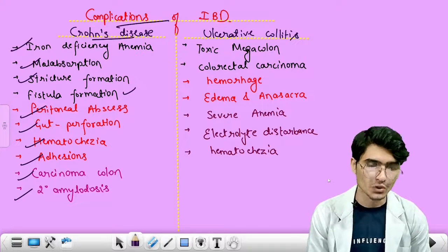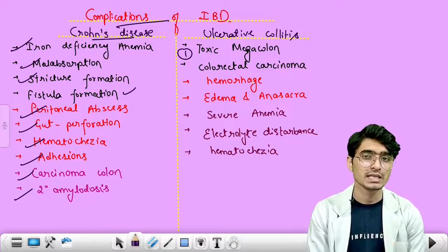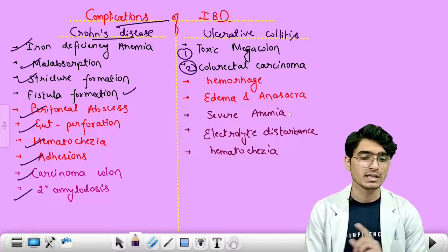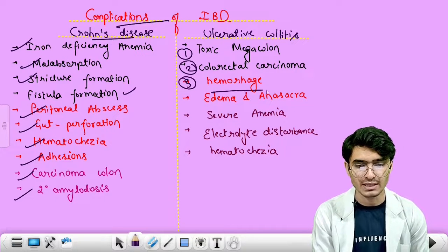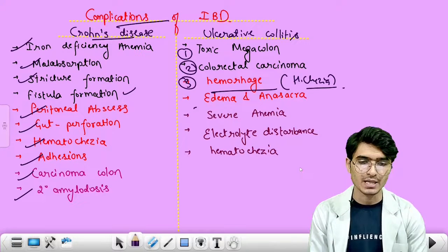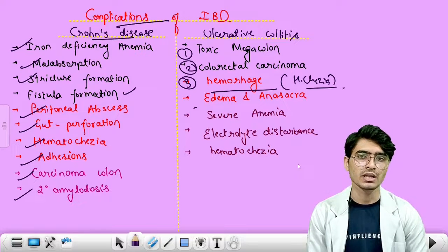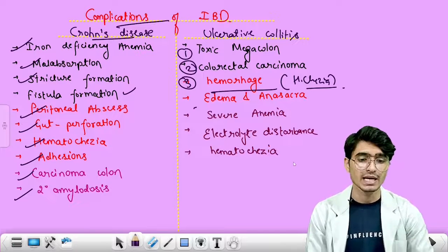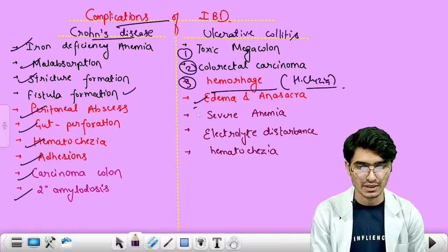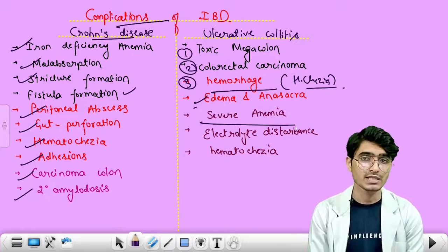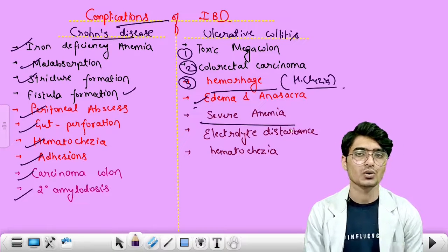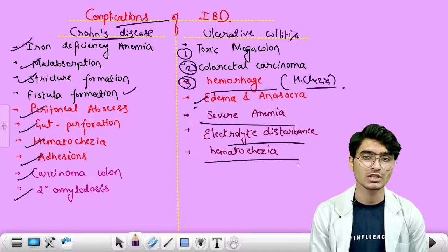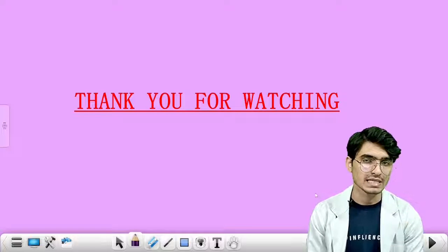Complications of ulcerative colitis: first, toxic megacolon — a surgical emergency. Second, increased risk of colorectal carcinoma. Third, hemorrhage and hematochezia. Fourth, edema and anasarca — heavy blood loss in defecation decreases serum albumin and blood colloidal osmotic pressure, causing generalized edema and anasarca. Fifth, anemia from massive blood loss and anemia of chronic disease. Sixth, electrolyte imbalance. These are the complications of inflammatory bowel disease.